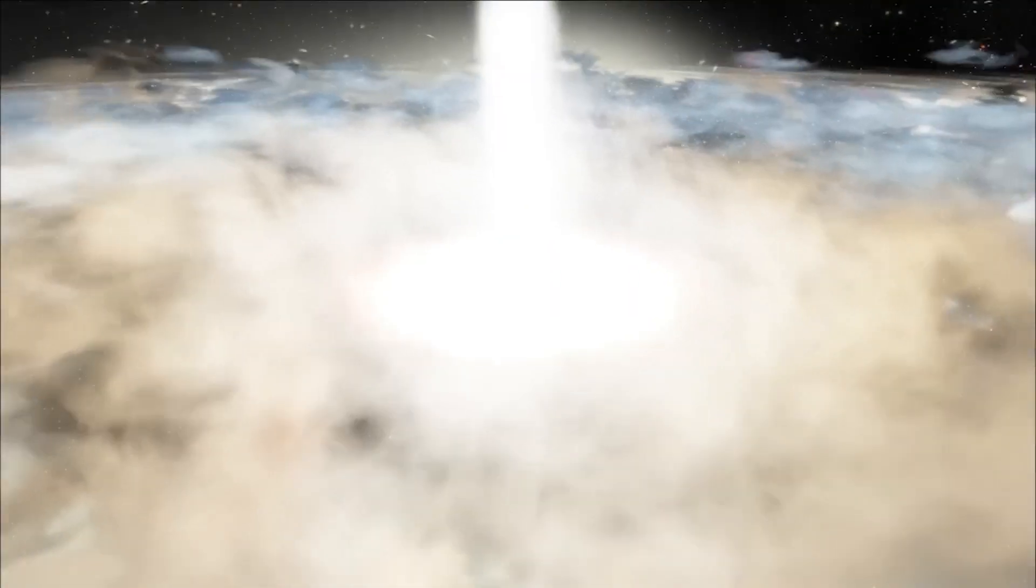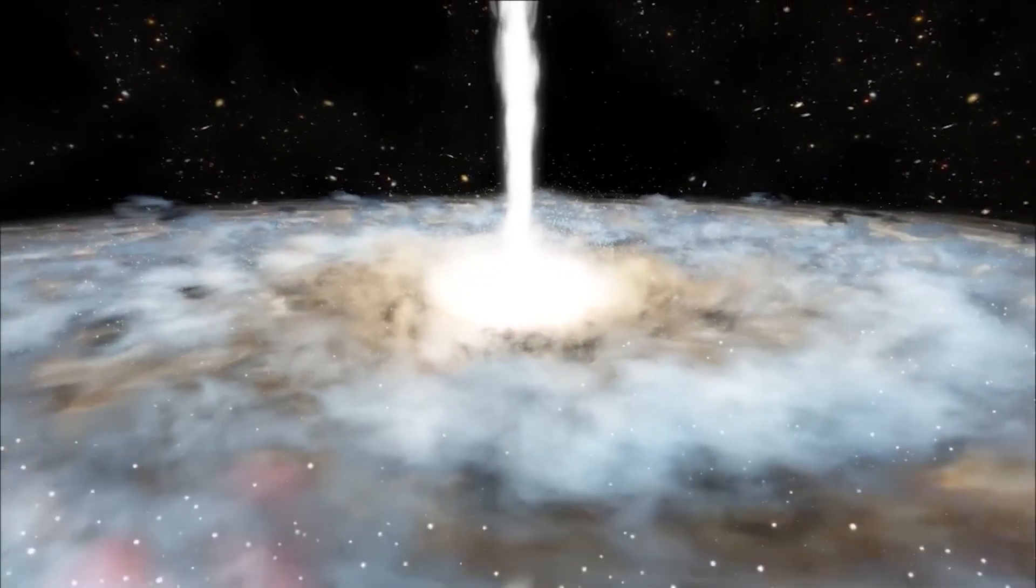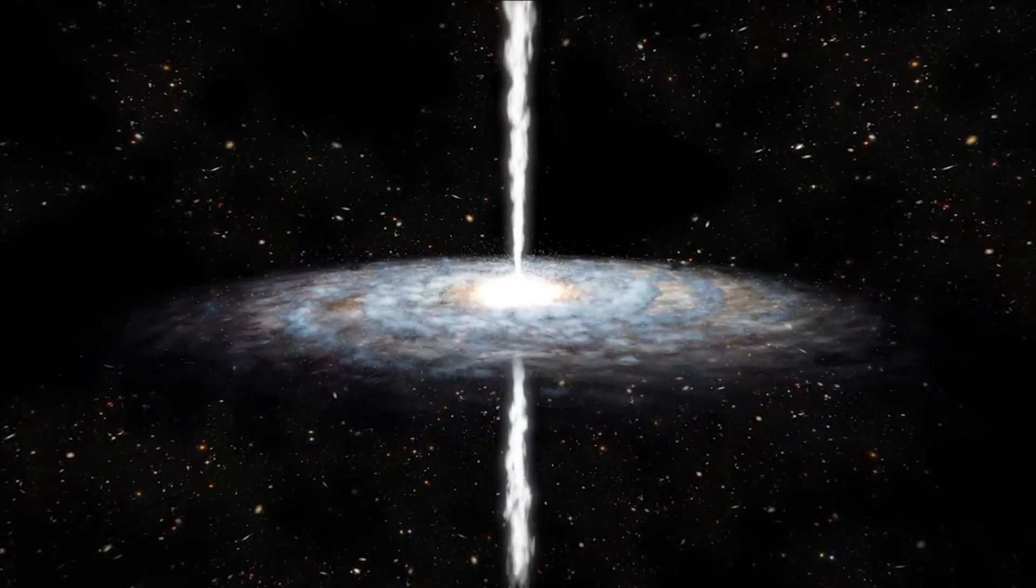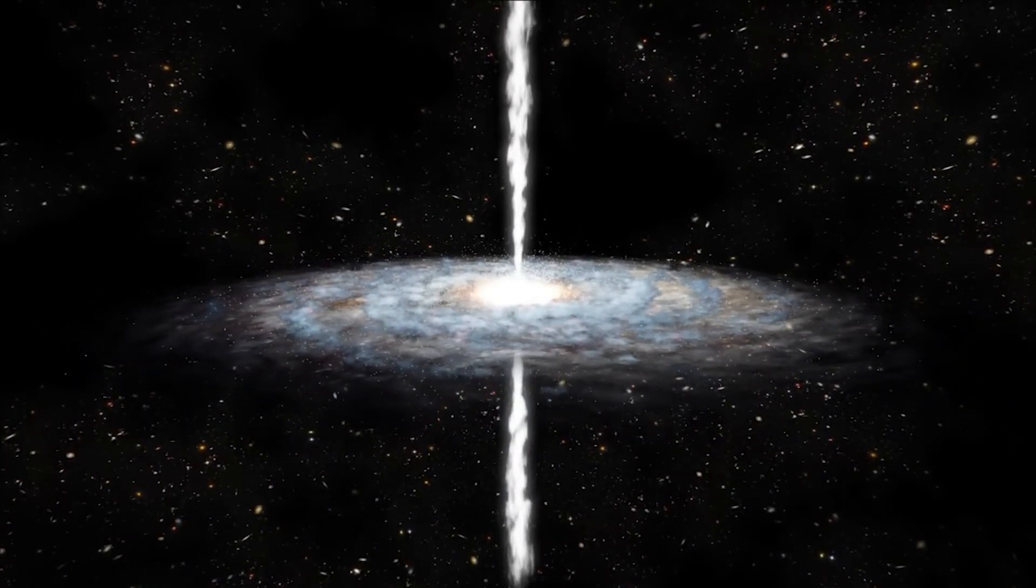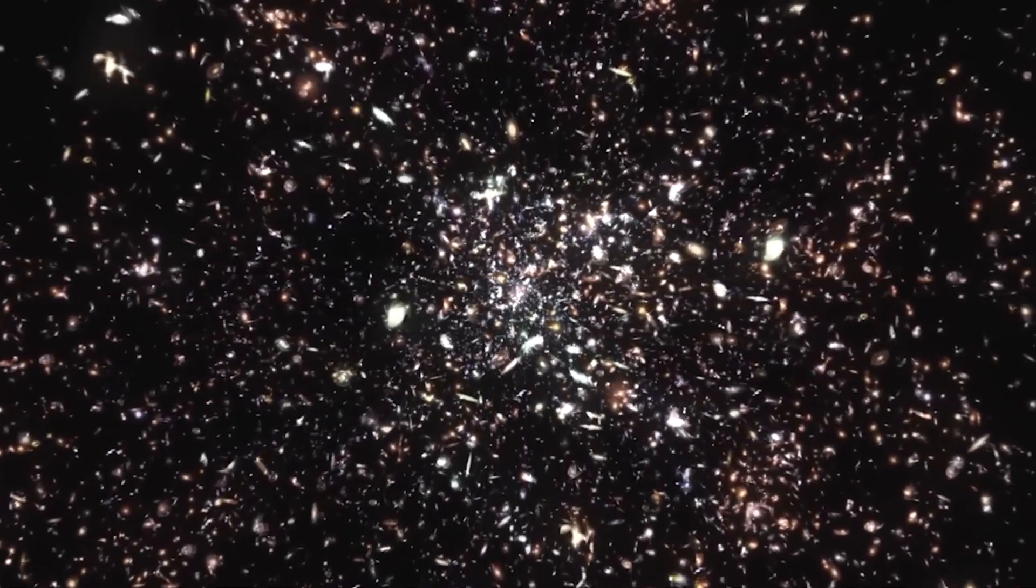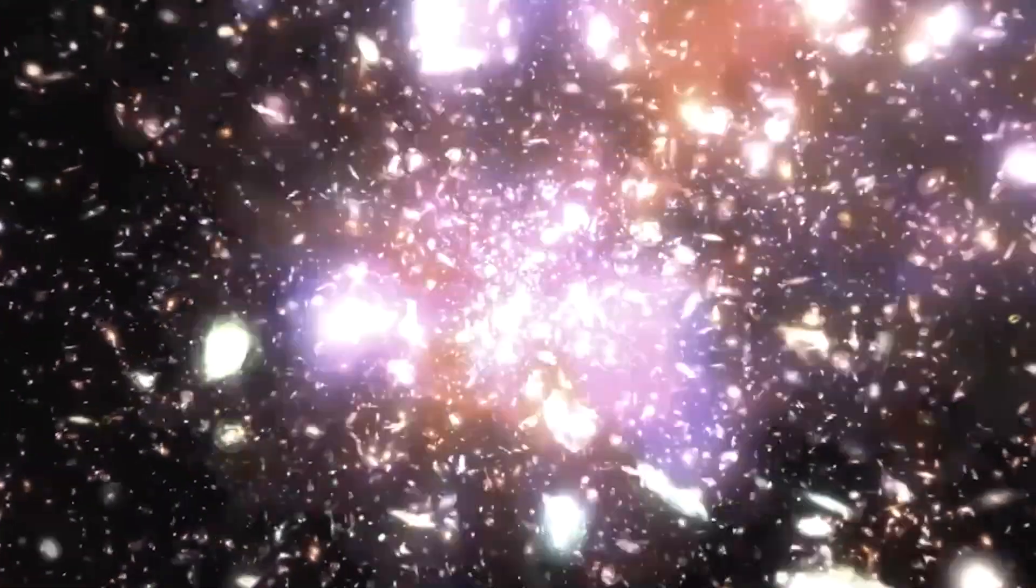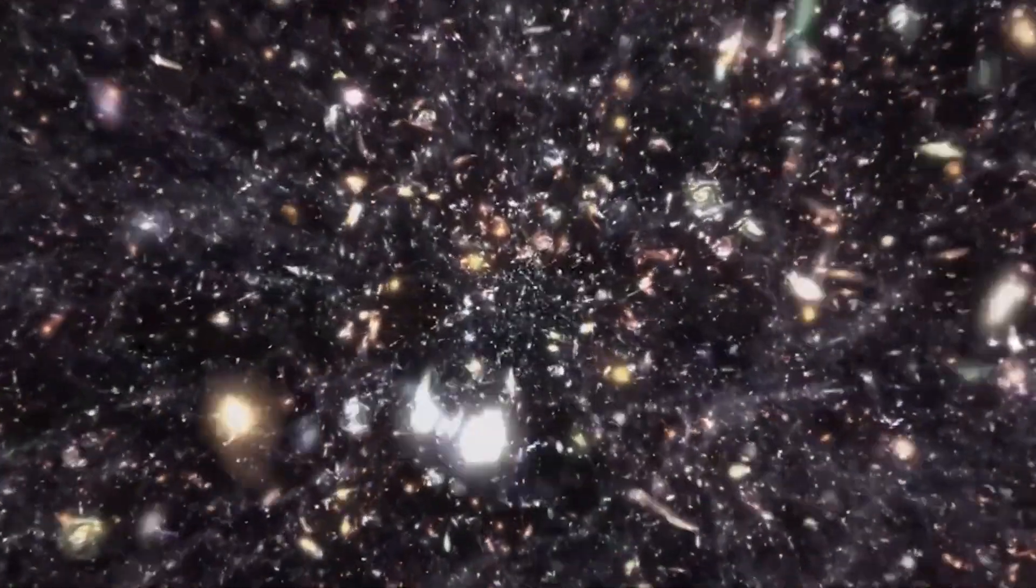Some scientists have proposed the idea of a wormhole connecting a black hole and a white hole, suggesting that they could be different manifestations of a unified phenomenon. According to this idea, matter falling into a black hole could emerge from a white hole in a different region of space-time or even another universe. This raises the possibility that the 700 galaxies detected in a black hole may have ended up there because of a white hole, and therefore we are only seeing part of the story.